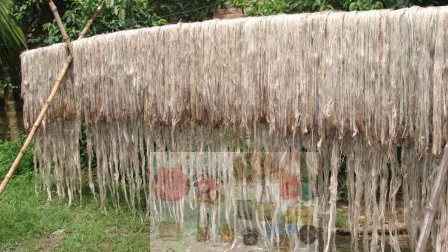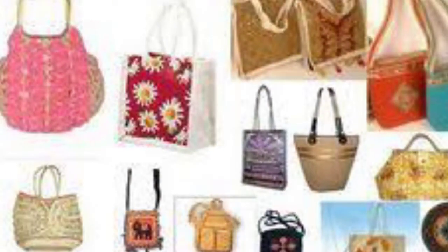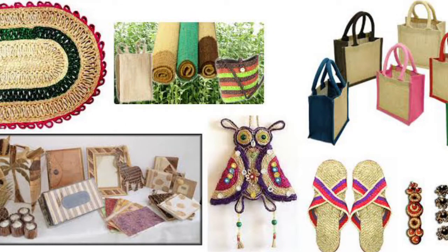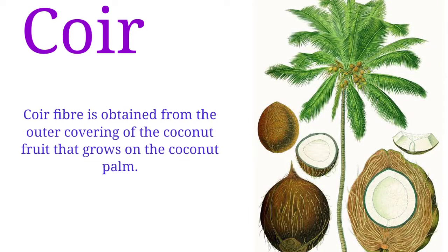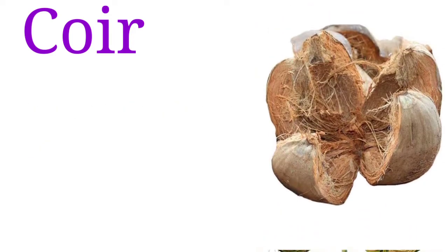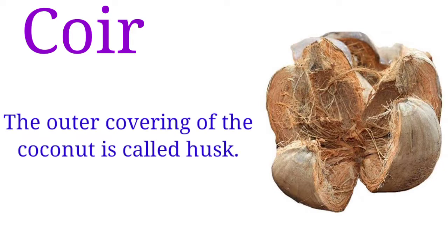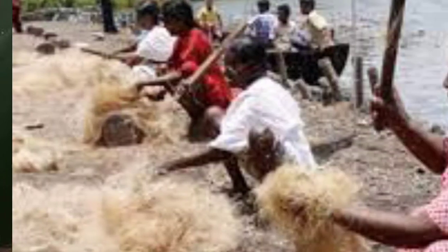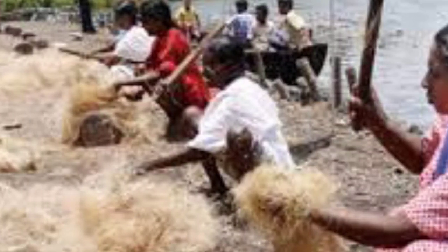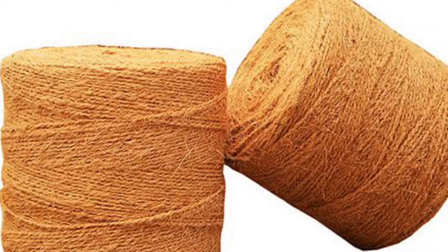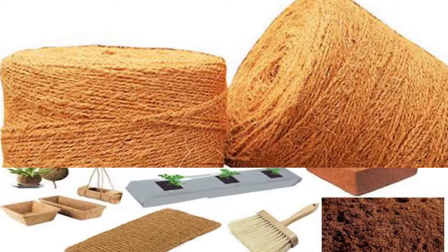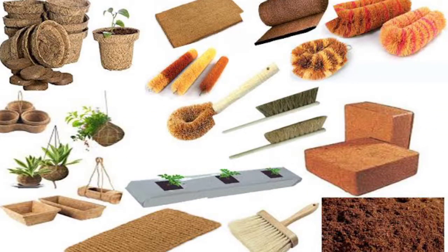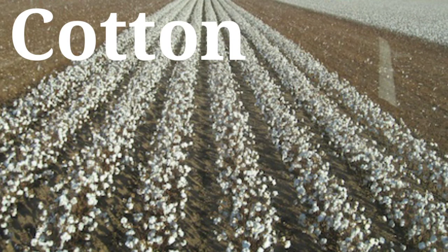Jute fiber is used to make ropes, bags, carpets, door mats, and many more objects. Next is coir. Coir fiber is obtained from the outer covering of the coconut fruit, called the husk. To obtain coir fiber, the husk is removed from the coconut and soaked in water for up to ten months. The softened husk is then beaten to get the coir fiber. The golden coir fibers are spun into yarns, which are used to make mats, floor coverings, garden articles, and ropes. India and Sri Lanka are the world's major producers of coir fiber.